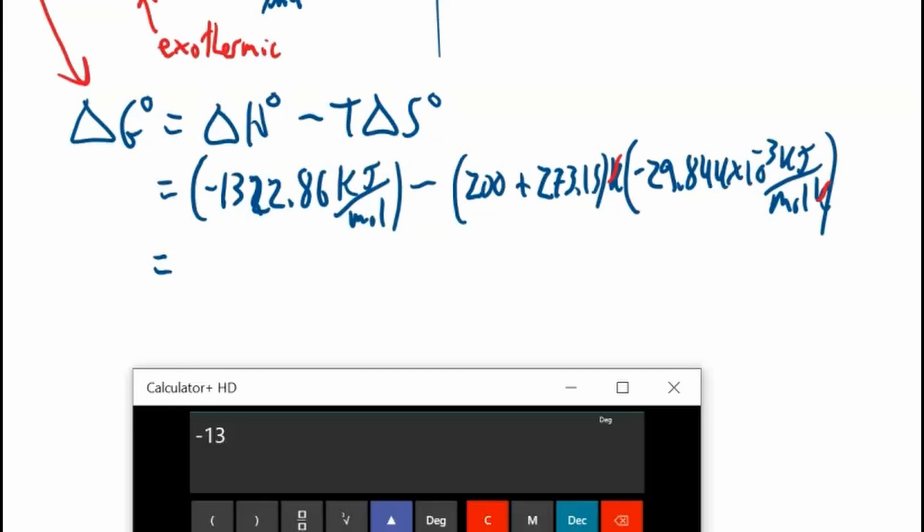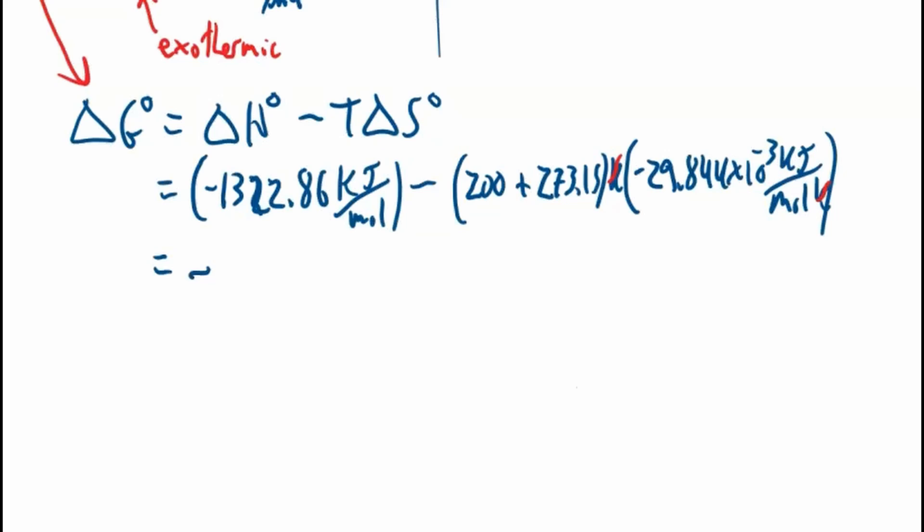This Kelvin cancels out with this Kelvin, so we're in kilojoules per mole and life is good. Negative 1322.86 minus 473.15 times negative 29.844 times 10 to the power of negative 3. That all looks good. Negative 1308.7, negative 1308.7 kilojoules per mole.